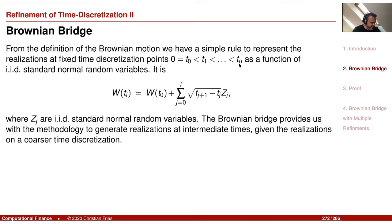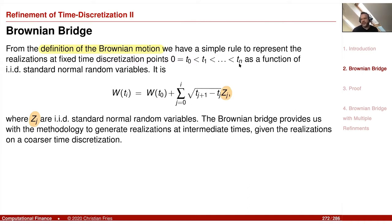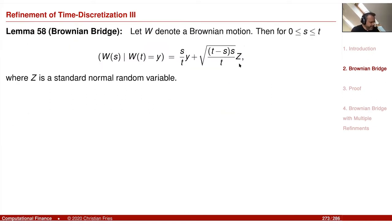Recall the definition of the Brownian motion — it is very easy to generate. You start from some initial value and then you just add normally distributed random increments. There is a sequence of IID standard normals, and you multiply them with the square root of the time step size to make it mean zero with standard deviation equal to the square root of the time step size. Adding these gives you the Brownian motion at the discrete time steps; the increment is normally distributed with mean zero and standard deviation square root of the time step.